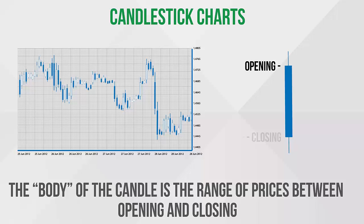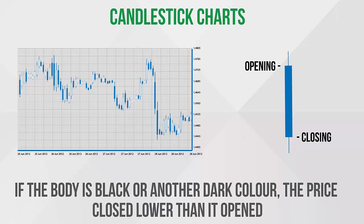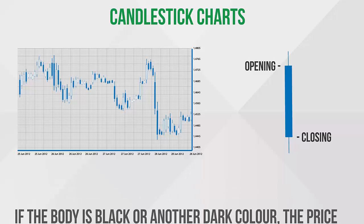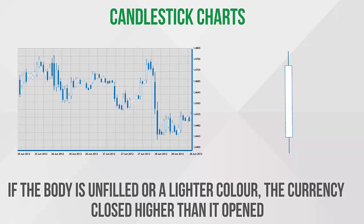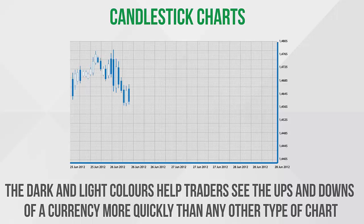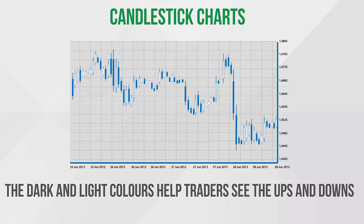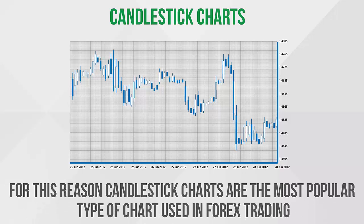The major difference between candlestick charts and bar charts is how the opening and closing prices are displayed. The body of the candle is the range of prices between opening and closing. If the body is black or another dark color, the price closed lower than it opened. If the body is unfilled or a lighter color, the currency closed higher than it opened. The dark and light colors help traders see the ups and downs of a currency more quickly, which is why candlestick charts are the most popular type of chart used in Forex trading.